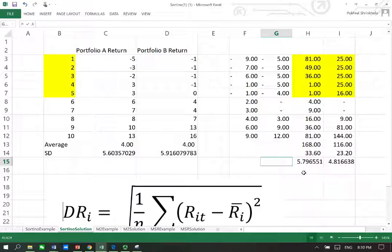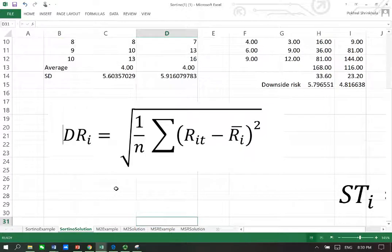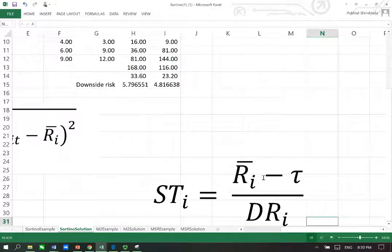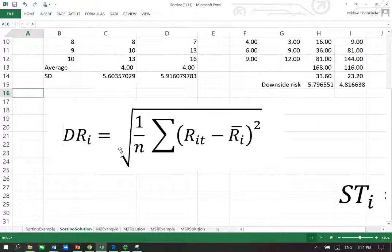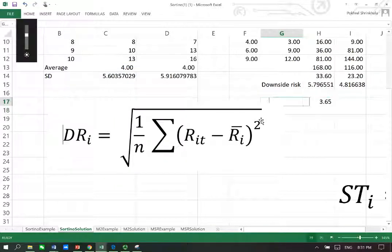Next, what I need is the Sortino ratio. In the case of Sortino ratio, I need the average return, which I've already calculated, which is 4, minus that threshold. Let's assume that the threshold theta is 2. Therefore, what I get now is 4 take away 2, and then I need to divide it by downside risk, which is 5.79. This is my Sortino ratio for portfolio A.